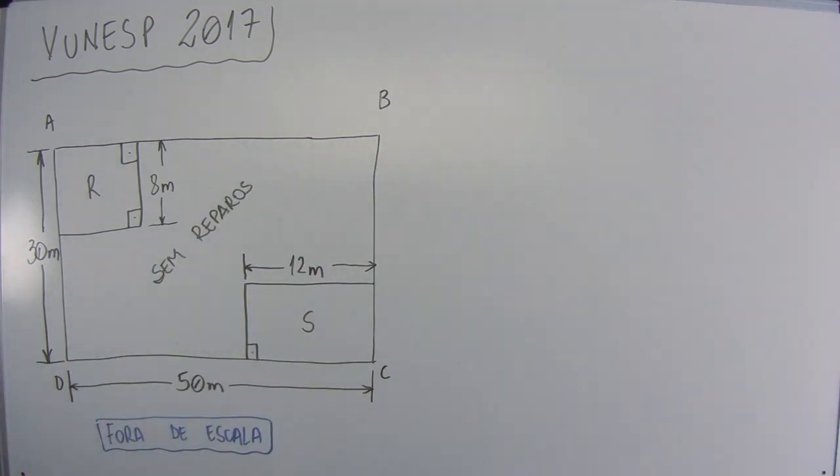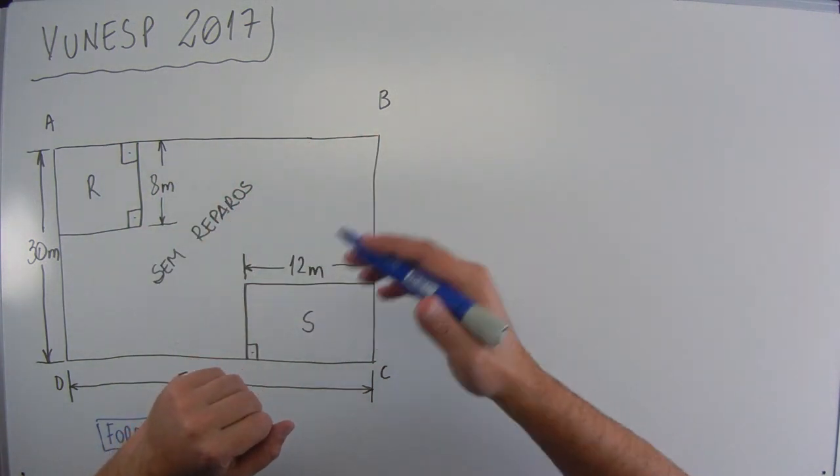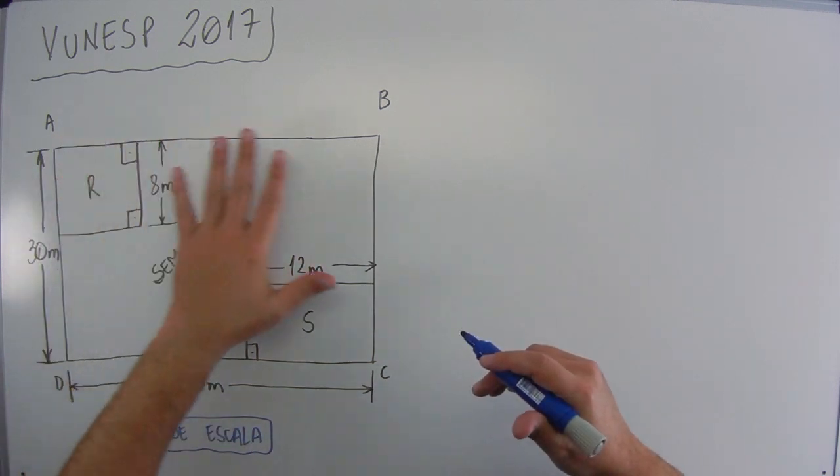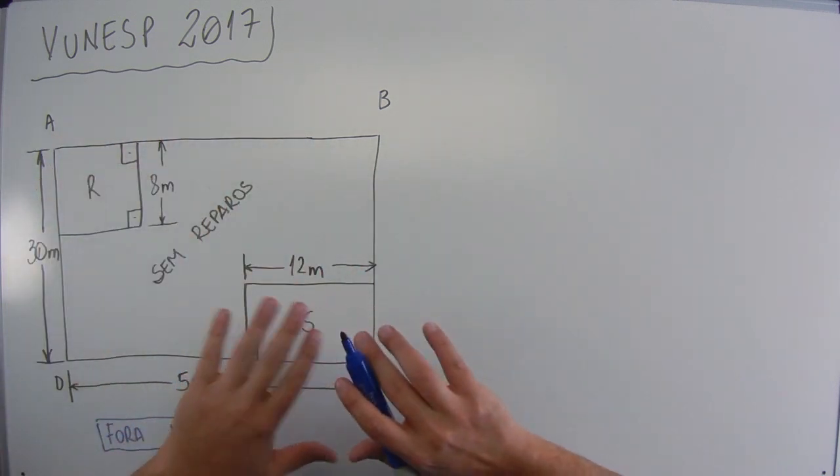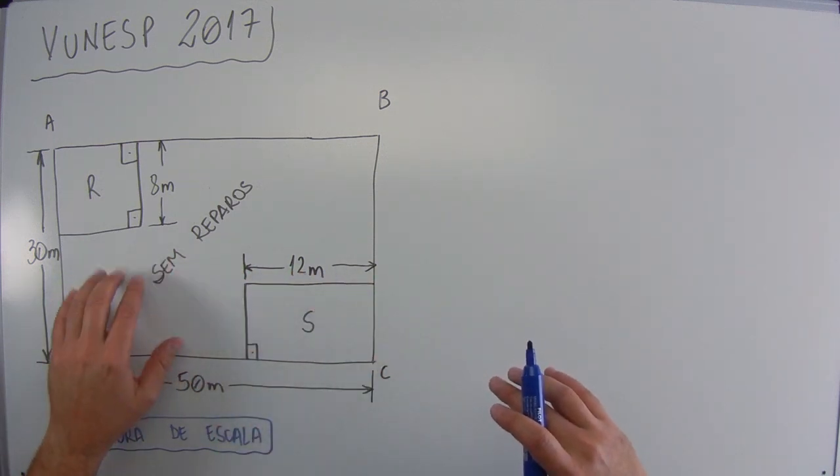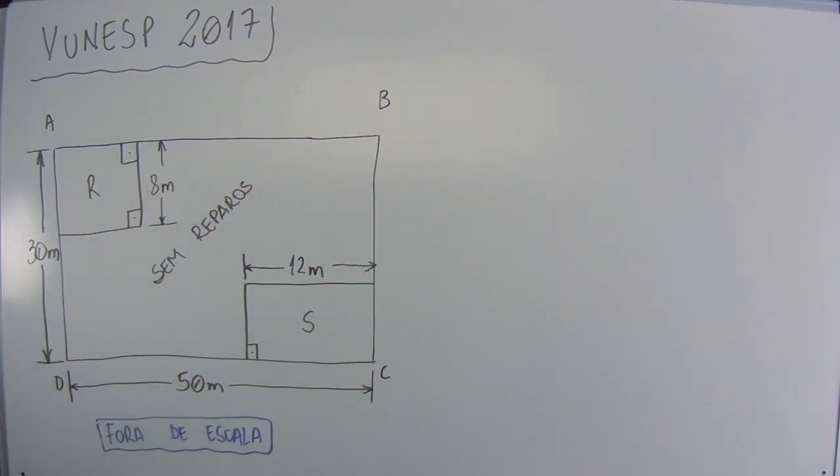Então vamos ver como é que resolve essa questão. Um pátio retangular ABCD precisou de reparos no piso e duas regiões R e S foram isoladas, conforme mostra a figura. Então isso aqui é um pátio e essas duas regiões R e S foram isoladas. Tá dizendo aqui, a figura tá pintada que aqui foi sem reparos. Então nessa região aqui não teve reparo. Vamos continuar lendo.